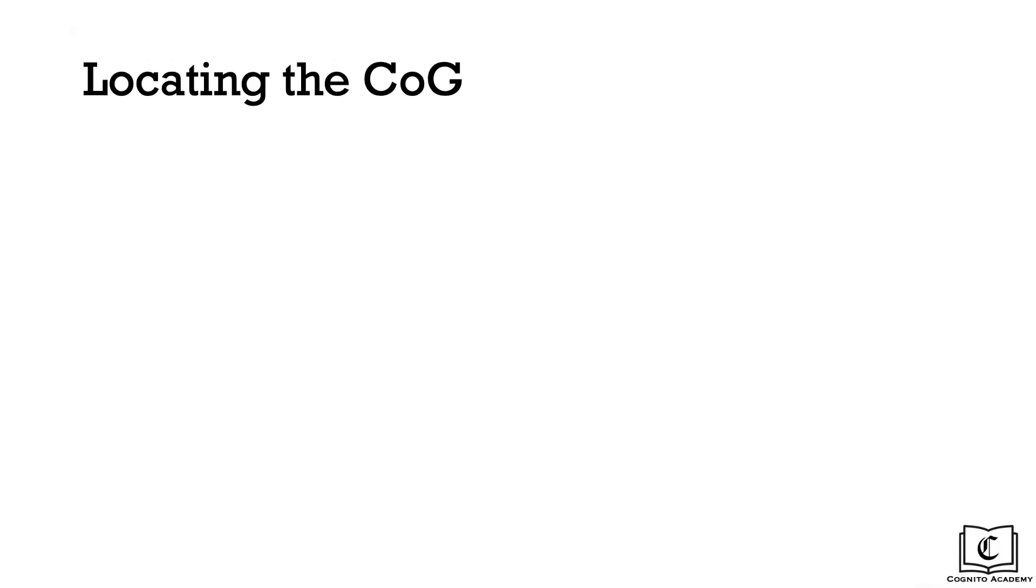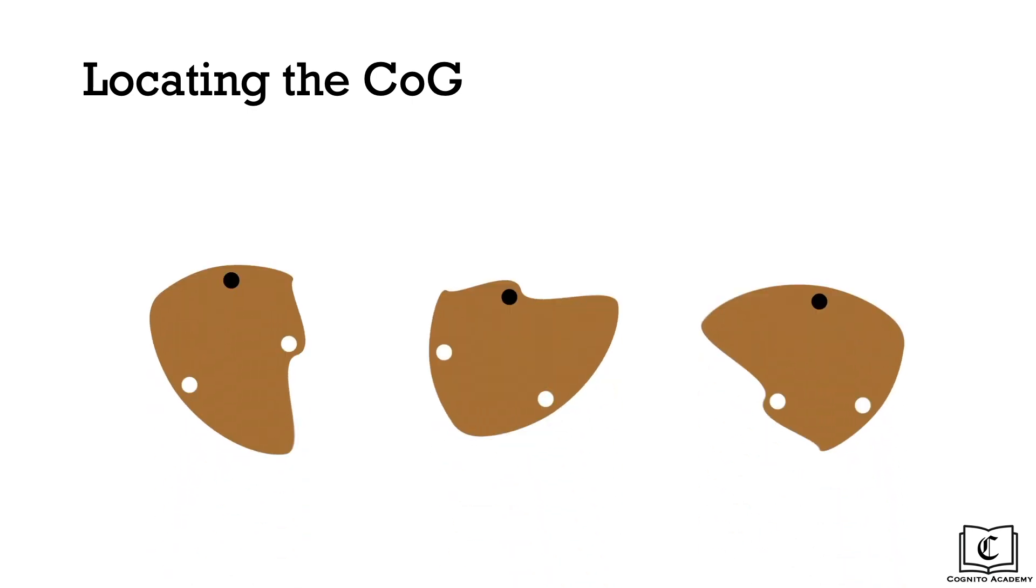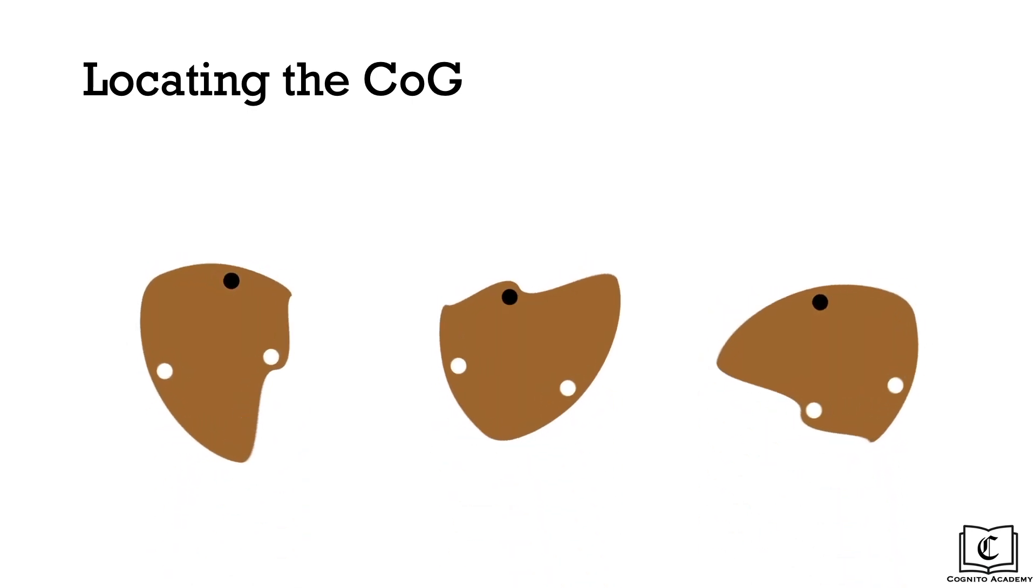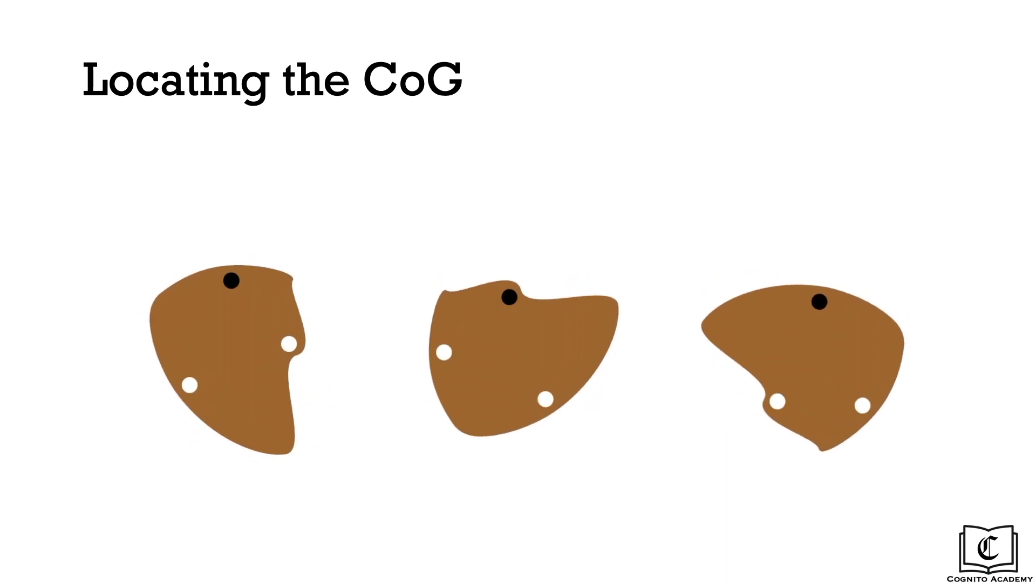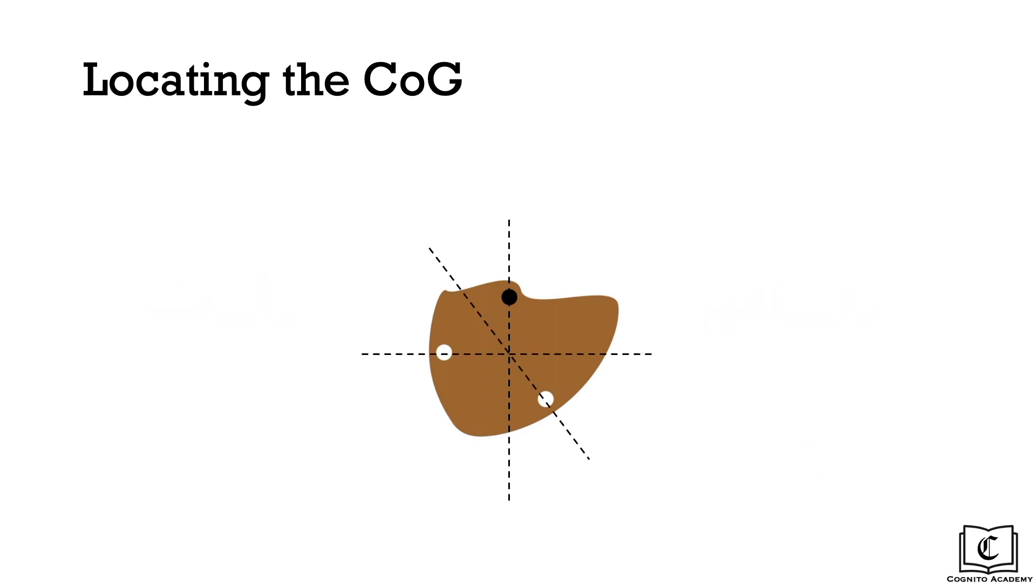So, how do we find the center of gravity of any object? Let's take this object for instance. We will hang it on three different points, and draw a straight line down for each of these three hangs. The intersection of these three lines will be the center of gravity of this object.